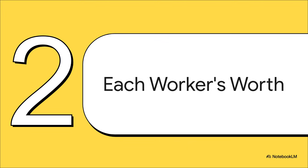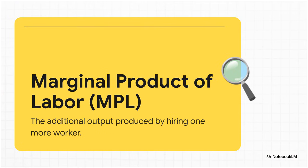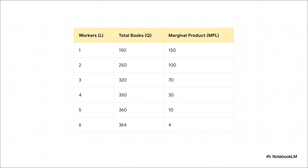We need to translate their output — the number of books they help produce — into cold, hard cash. First up, we have to look at something called the marginal product of labor, or MPL. Don't let the fancy name fool you. It's not about the total number of books; it's simply about how many extra books get made when you hire one more person. Check this out: the first worker adds a whopping 150 books, but the fourth worker only adds 30. This is a super important idea in economics called diminishing marginal returns — a fundamental concept you see everywhere.